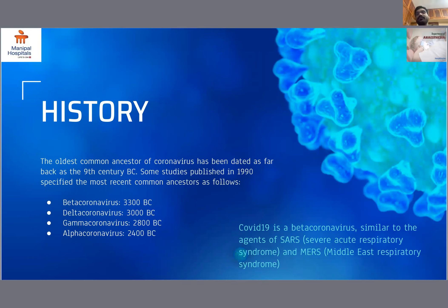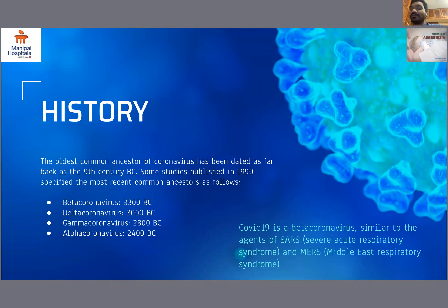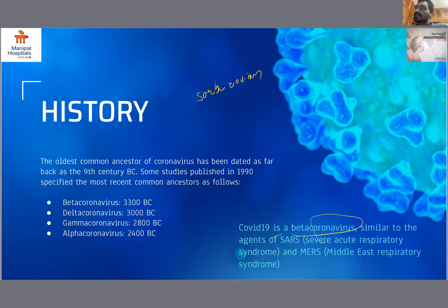Coming to the history of coronavirus, the oldest common ancestor of coronavirus has been dated as far back as the 9th century BC. Some studies published in 1990 specified the most recent common ancestors as alpha, beta, gamma, and delta coronavirus. SARS-CoV-2 is from the genus beta coronavirus, and it belongs to the subfamily of Sambico virus. It is very much similar to the SARS coronavirus which caused the SARS epidemic during 2003, and to the SARS-related coronavirus found in horseshoe bats discovered in Hong Kong and mainland China.